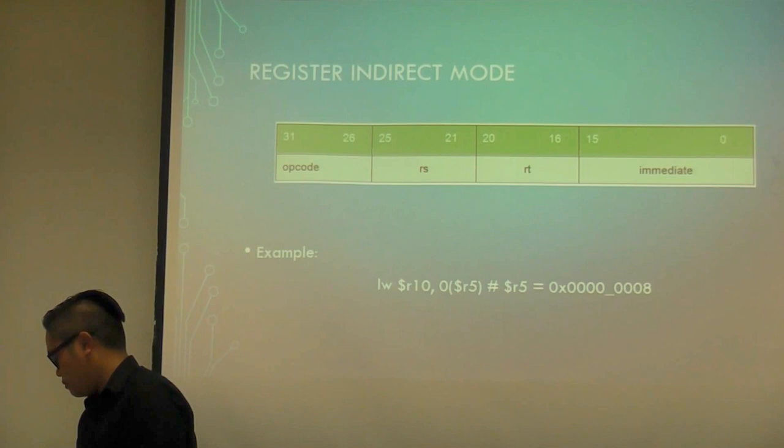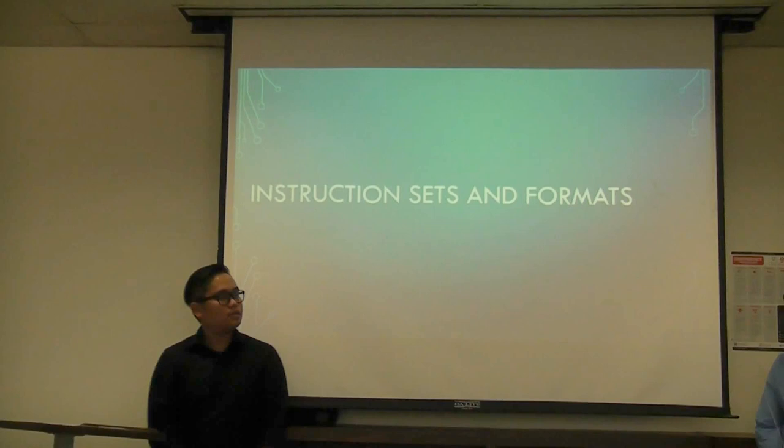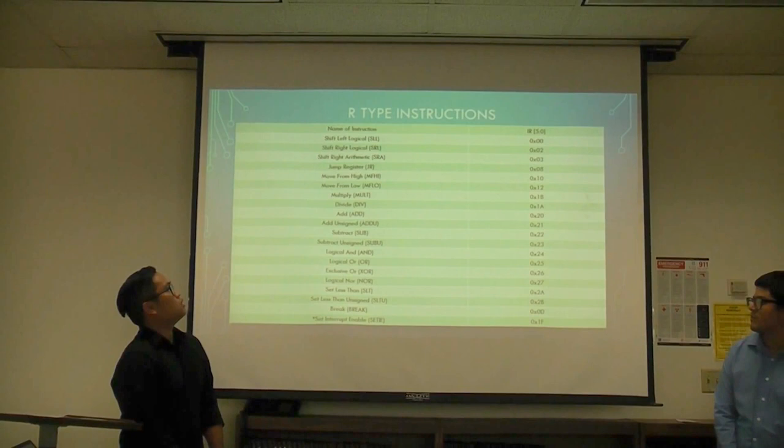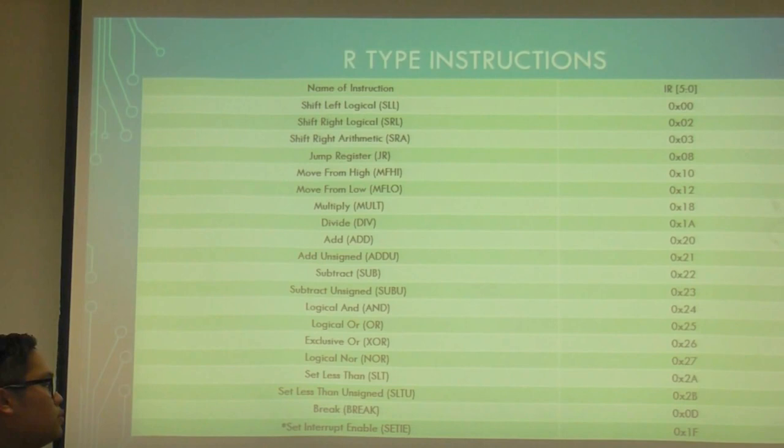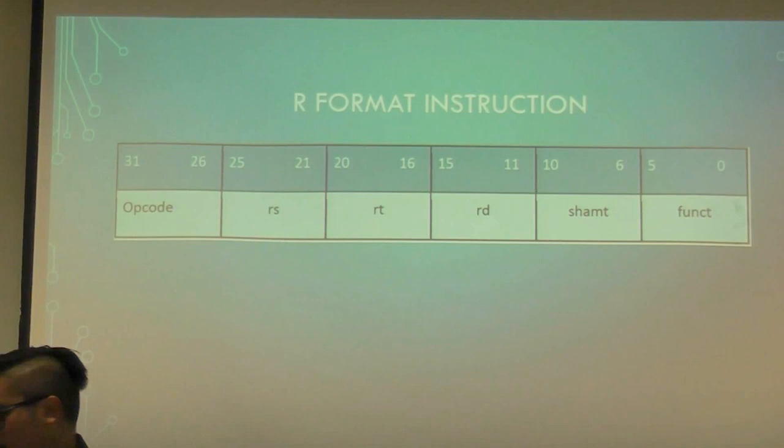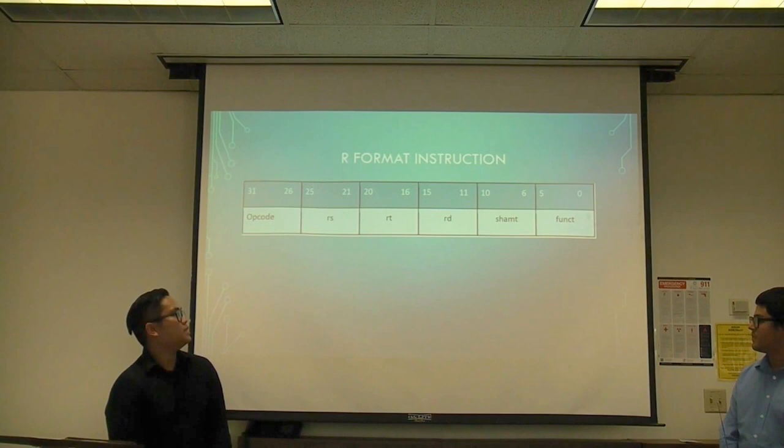Here we have the instruction sets and formats. We have R-type instructions starting from shift left logical all the way to set interrupt enable. The R format instruction has RS, RT, and RD, plus our enhancement of shift amount, and also a funct field, which is a function code.